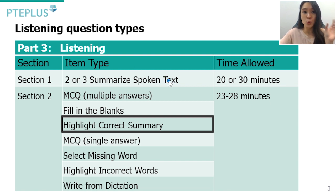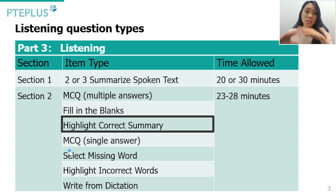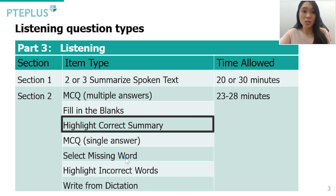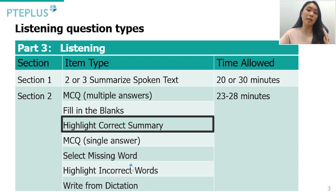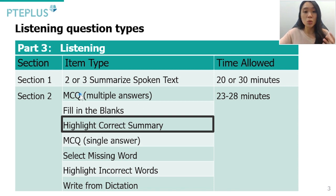Section two contains the remaining seven listening question types, and these are timed as a whole. You get one timer of about 23 to 28 minutes, depending on how many questions there are, to complete the entire section. So it's very important to manage your time well and allocate sufficient time especially to the question types that are worth more.